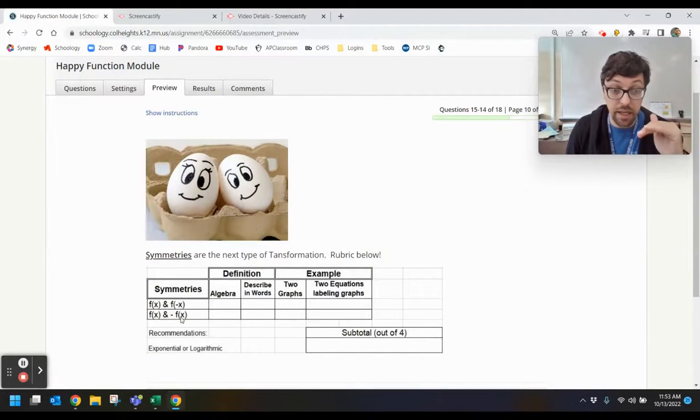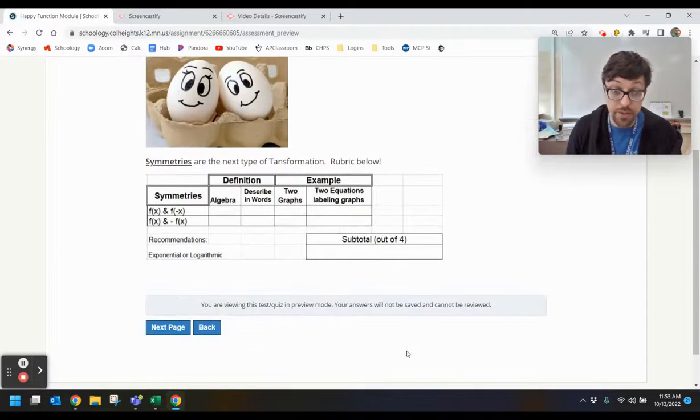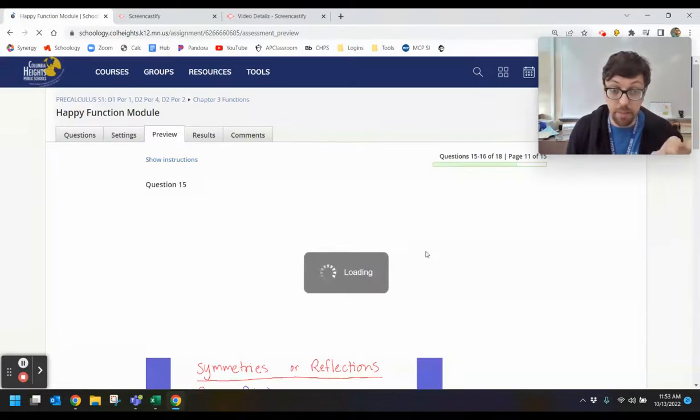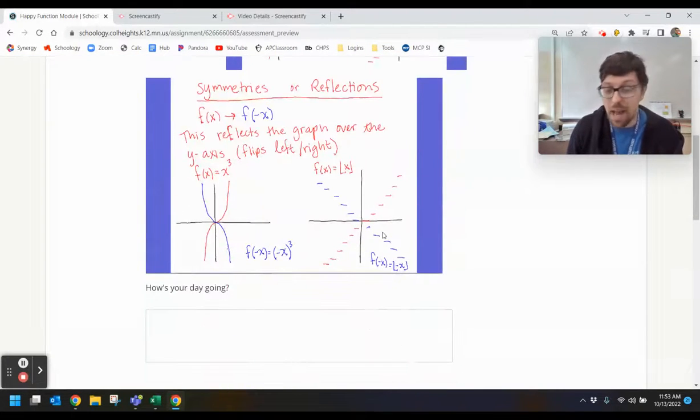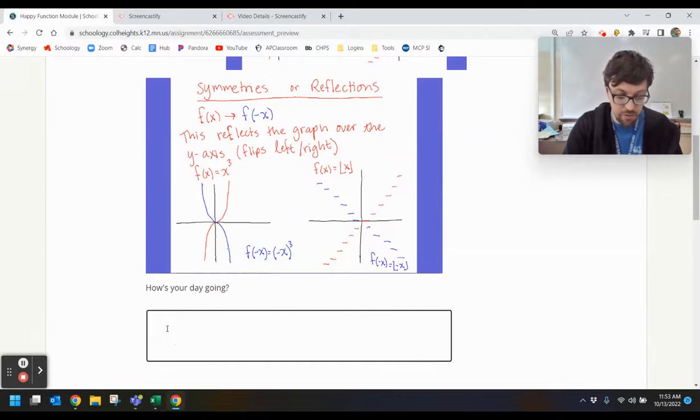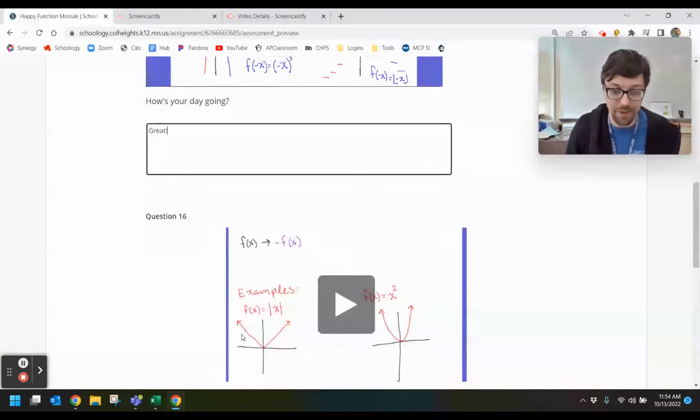Another rubric, the symmetry transformations are out of four points. There is an example of what you can do with those. This video actually does work, so great. You can copy down these examples, or if you would like to make your own or add additional examples, you can do that. How's your day going? My day is going great, if you want to answer that question.